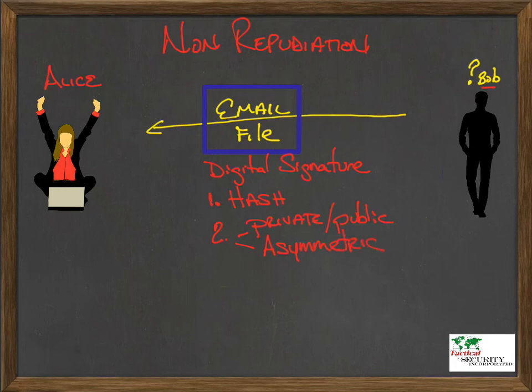Unfortunately with that, what we're also going to have to add is PKI, or public key infrastructure. Public key infrastructure is going to give Alice the ability to trust that it is Bob's public key, and the end result that this email did come from Bob.